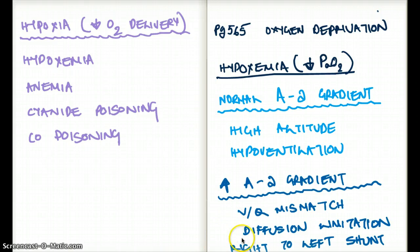and we decided that the A-a gradient was high, if you remember that question from the previous video. And we ruled out diffusion limitation for that particular question. That was because the question was, what is increased and diffusion limitation, diffusion decreases.